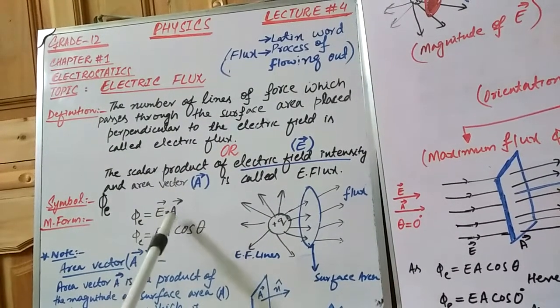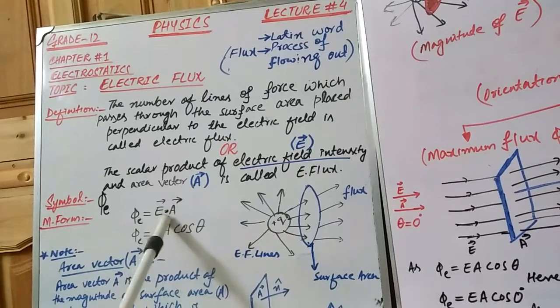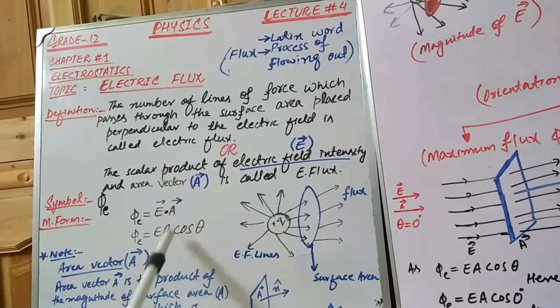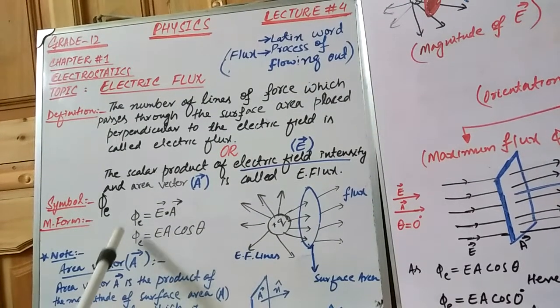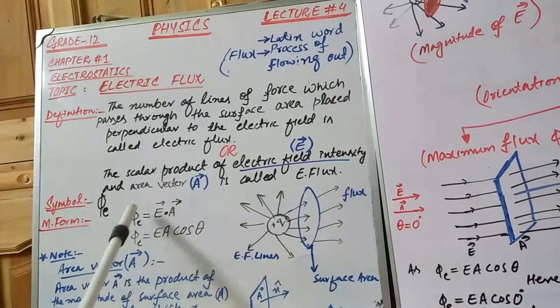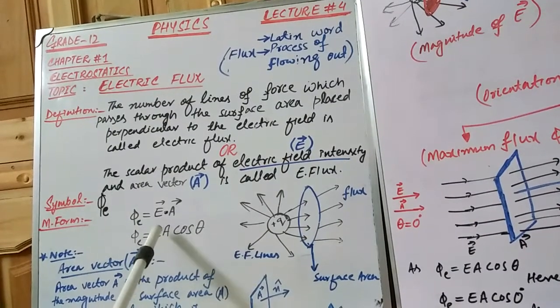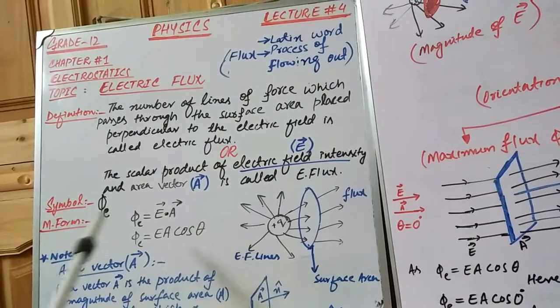Being a dot product, the dot is replaced with cos θ. So we can write φ_E = E A cos θ.